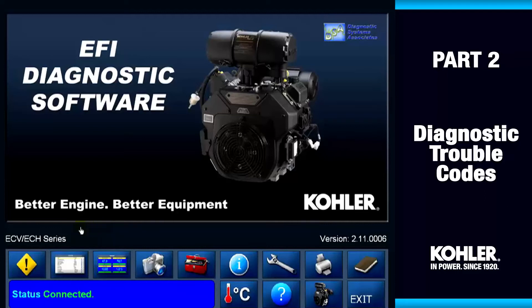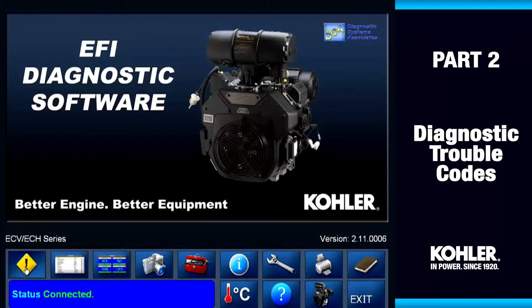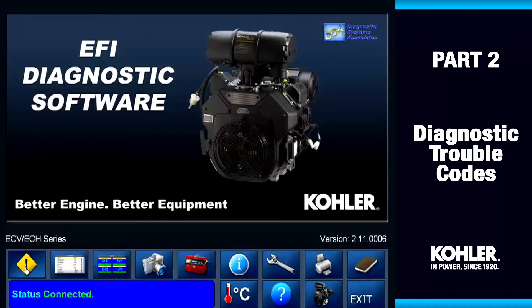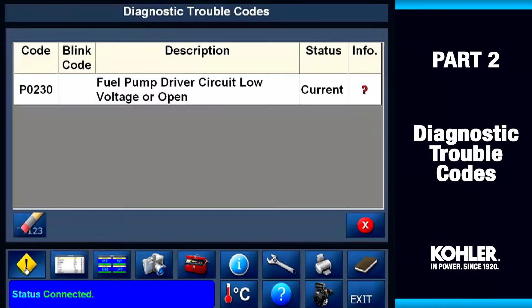Let's take a look at diagnostic trouble codes. Each button on the control panel has a special diagnostic or information capability. Let's look at the trouble code button — I call it the money button because it saves you a lot of time. You can check the user manual for trouble codes, but the button is much quicker.